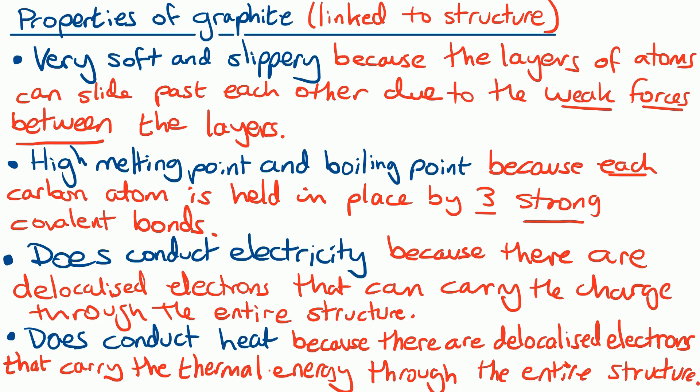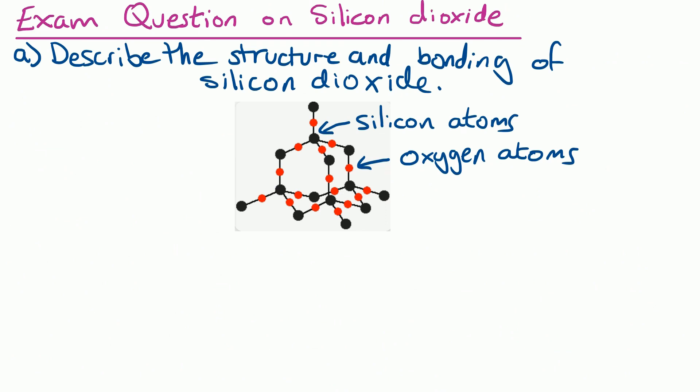Here's a typical exam question asking you about silicon dioxide. Straight away, the thing we notice is it looks a little bit similar to the structure of diamond. The question is: describe the structure and bonding of silicon dioxide. Pause the video, have a go, and use the diagram to prompt you — talk about what type of bonds are in the structure and how many bonds each type of atom is making. So first of all, it's a giant covalent structure — that would get you two marks, one for saying 'giant' and one for saying 'covalent'.